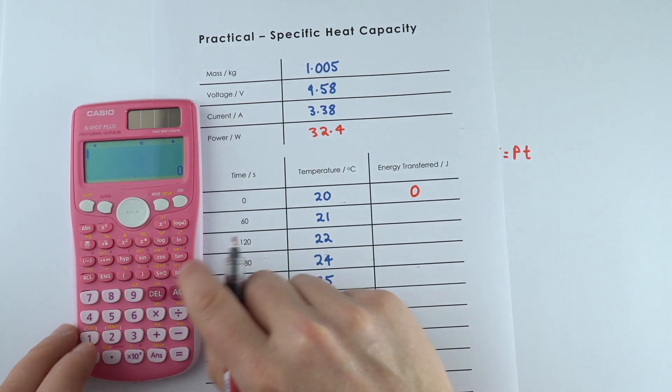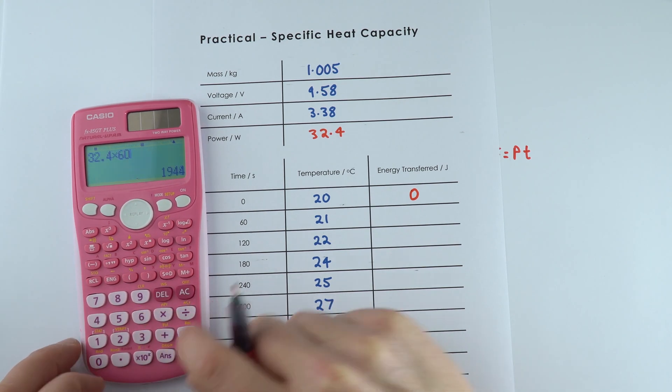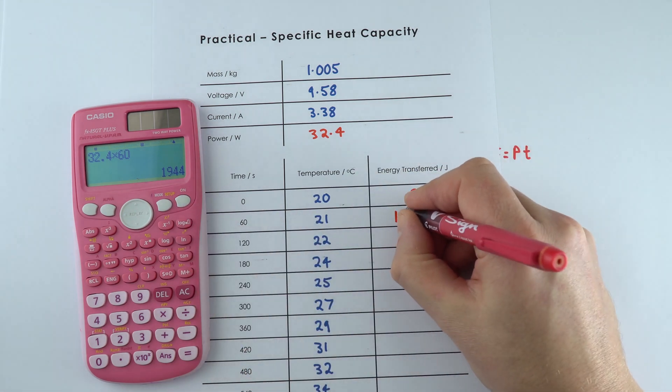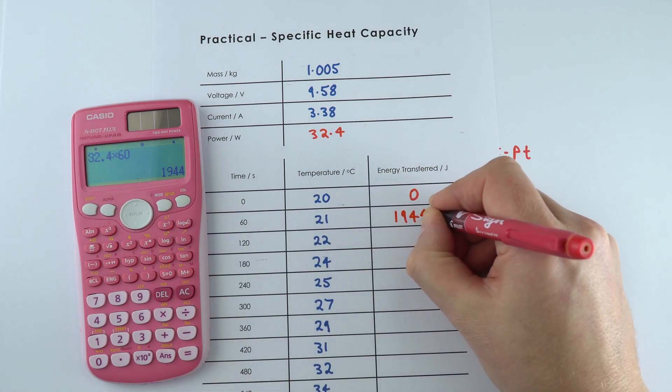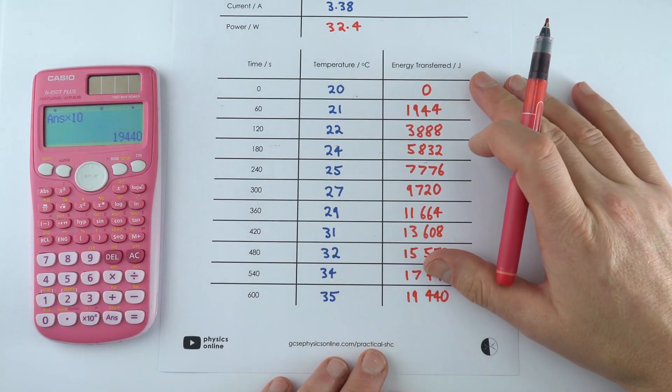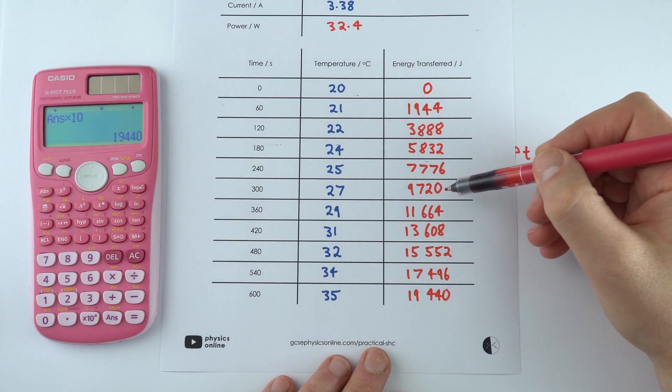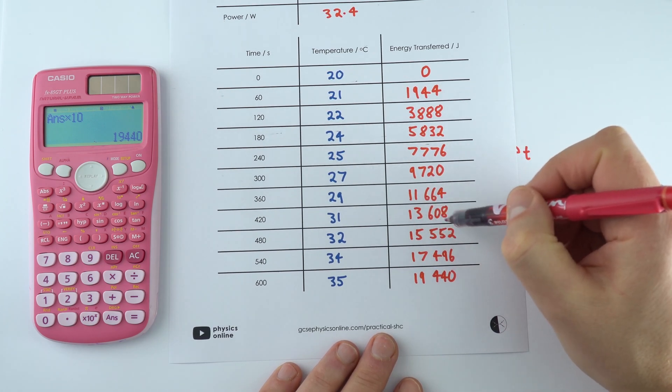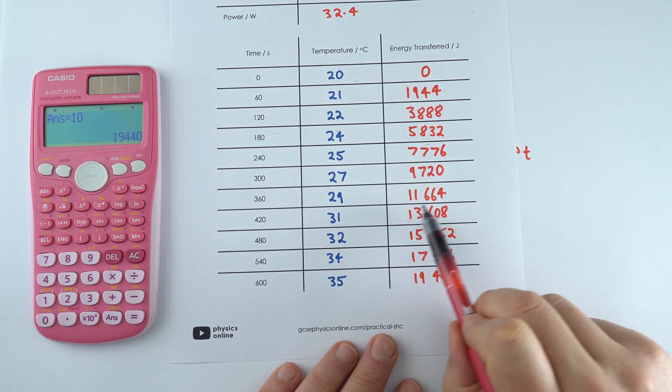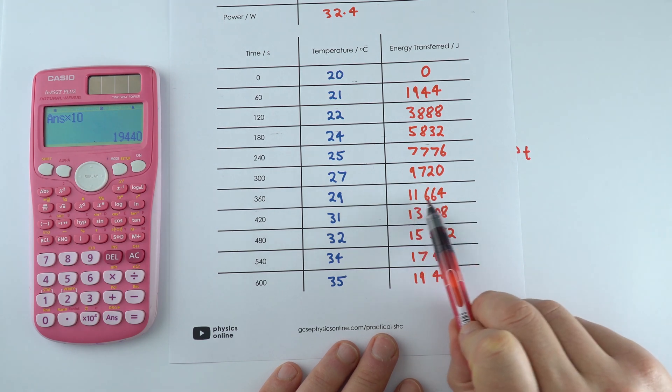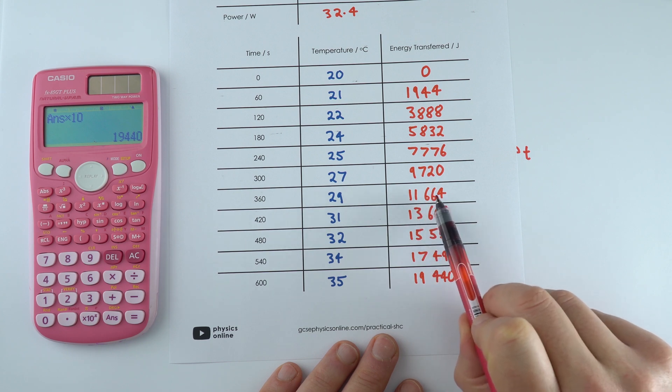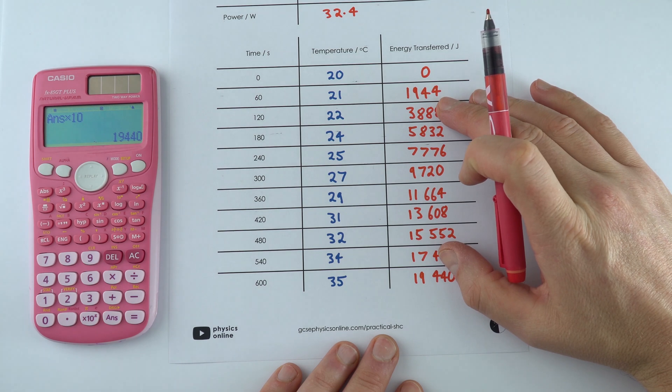After 60 seconds, we're going to have 32.4 multiplied by 60, which equals 1944. So I'm just going to leave it like that. So now we have some data here for the energy transferred in joules. I must say I've kept it with no decimal places. I've maybe gone to more significant figures than I can really justify, but when I come to actually plot this on the graph, I suppose this one here, for example, 11,664, I could probably plot to the nearest 100 joules. So this is the data for the energy transferred in joules.